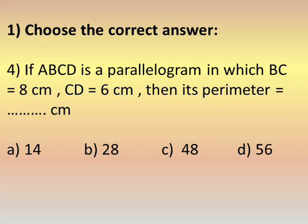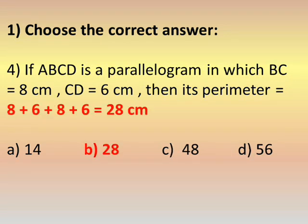Number four: if ABCD is a parallelogram in which BC equals 8 and CD equals 6, find the perimeter. The perimeter equals the sum of all side lengths: 8 plus 6 plus 8 plus 6 equals 28.